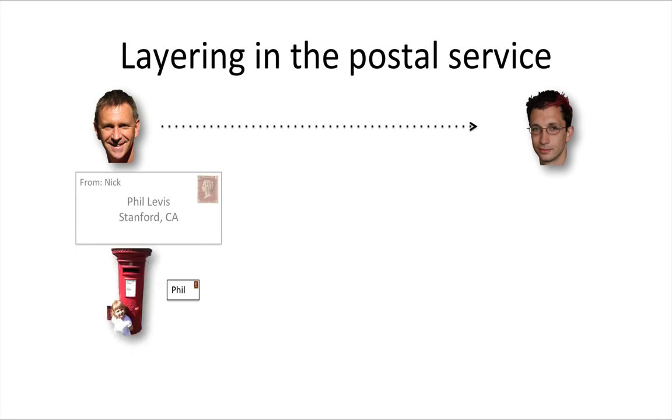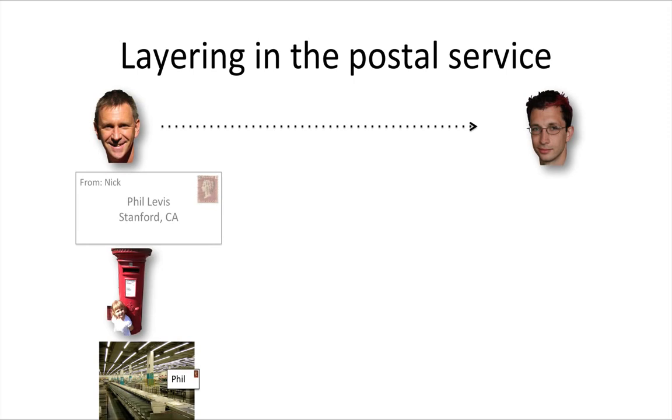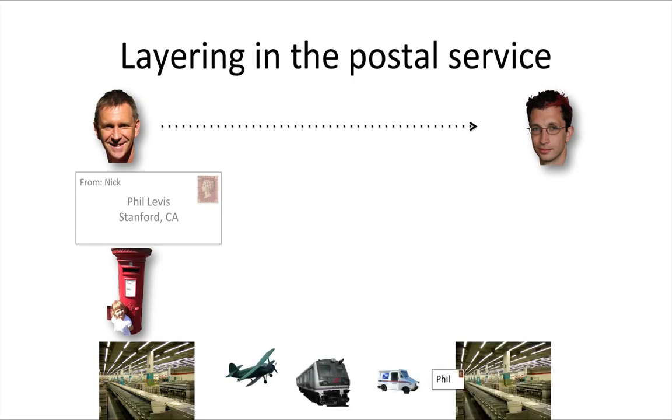The Postal Service sorts the mail, then sends it by a variety of different means, airplanes, mail trucks, trains, etc., until it reaches a sorting office near Phil. The mailman delivers the letter to Phil, who opens it and finds the book inside.